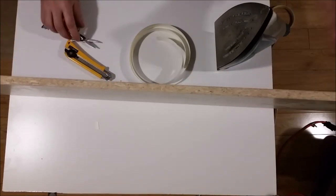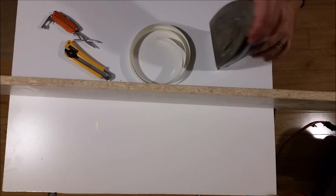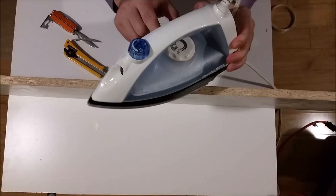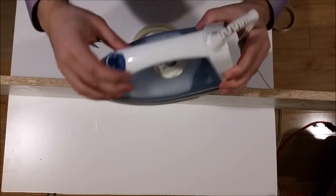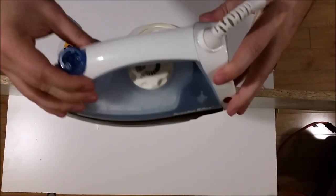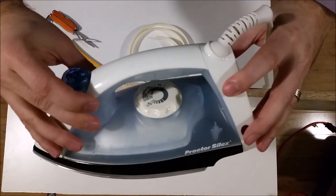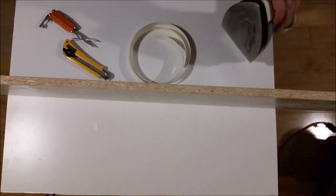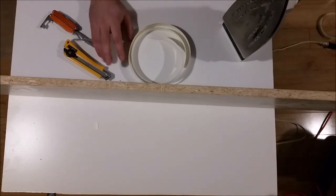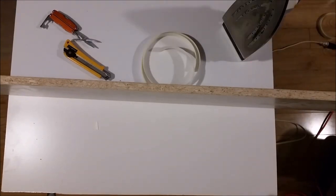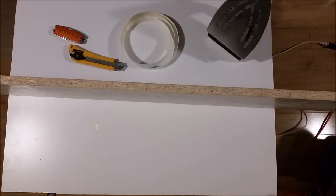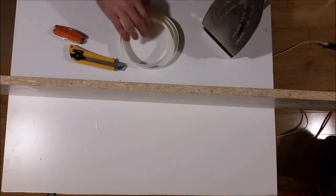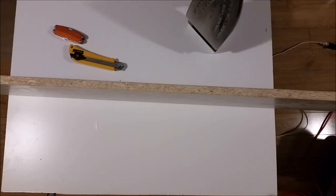The next step is to prepare your hot iron. For this you're gonna want to put it with the steam off, which I've got here, and you're gonna want to put it on linen mode. Let's see if I can get a view of this. It's kind of hard because of the angle, but that's usually the hottest a hot iron will go. All right, that should just about do it. See if it's hot enough.